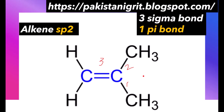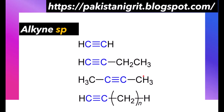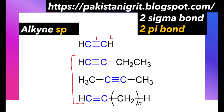Three sigma bonds also mean one pi bond will also be formed. Next is alkyne. Alkyne has sp hybridization. Here the carbon is forming two sigma bonds — one between these two carbons and one between this carbon and hydrogen. So alkyne has one sigma bond less than alkene, and its hybridization will be sp.